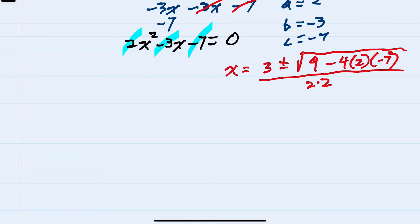Following the order of operations, we would do multiplication first, so this would simplify to x equals 3 plus or minus the square root of 9... 4 times 2 is 8, times 7 is 56, and the negatives cancel so this would be plus 56,